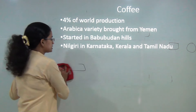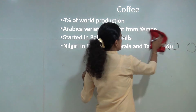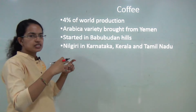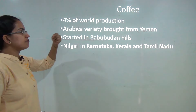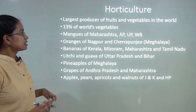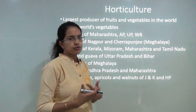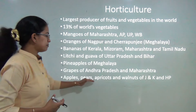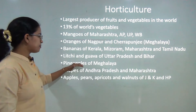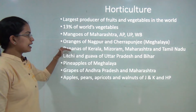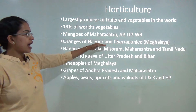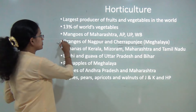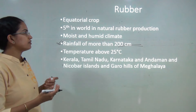India supplies 4% of world coffee. It started in the Bababuddin hills and is grown as a plantation crop mainly in the Nilgiris, Karnataka, Kerala, and Tamil Nadu. The first variety of coffee introduced was Arabica, which came from Yemen. India is the largest producer of fruits and vegetables in the world, with 13% of world vegetables grown here. Apple, pear, apricot, and walnuts are seen in Jammu & Kashmir and Himachal Pradesh. Pineapples in Meghalaya, grapes in Andhra Pradesh and Maharashtra, banana in southern India and northeast. Oranges are famous from Nagpur and also Cherrapunji.